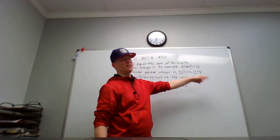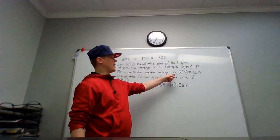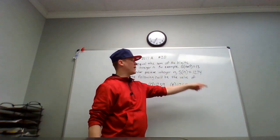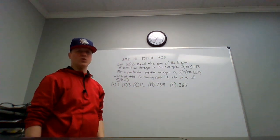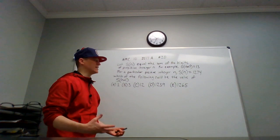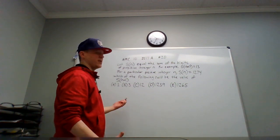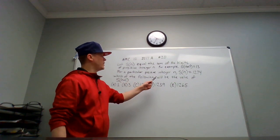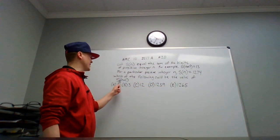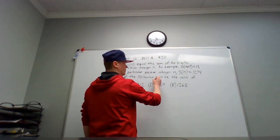For a particular positive integer n, s(n) is 1274. Obviously n is a very big number. We're not going to be able to guess n's value exactly. Maybe we'll see which of the following could be the value of s(n+1).